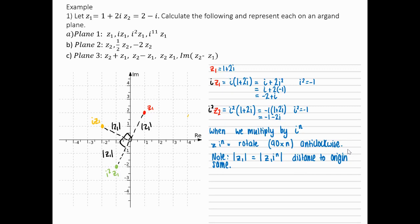i Z1, I've rotated 90 degrees anticlockwise from Z1. Basically, this is helpful because if you have i to, say, the power of 11 Z1, this means you rotate Z1 90 times 11, I don't know what that is, degrees anticlockwise around the origin.